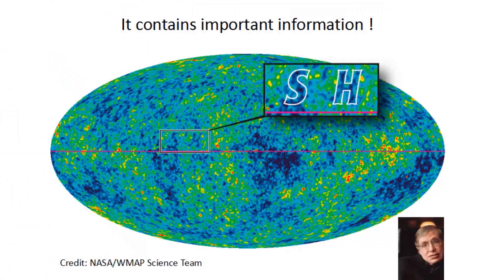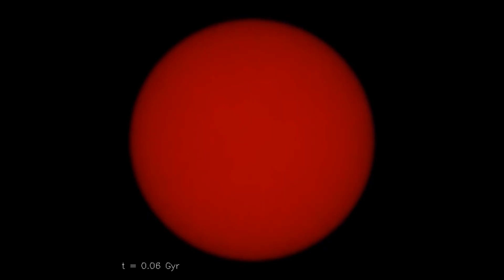It contains important information. Stephen Hawking has already been there — if you look closely, you can see 'SH' in the map.